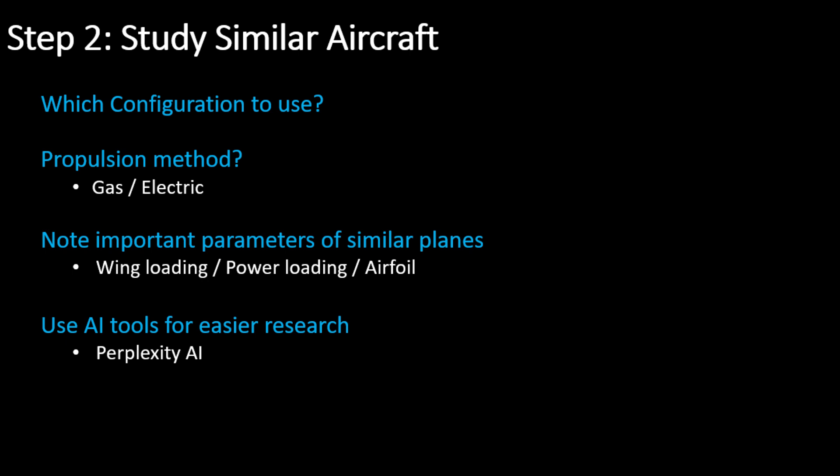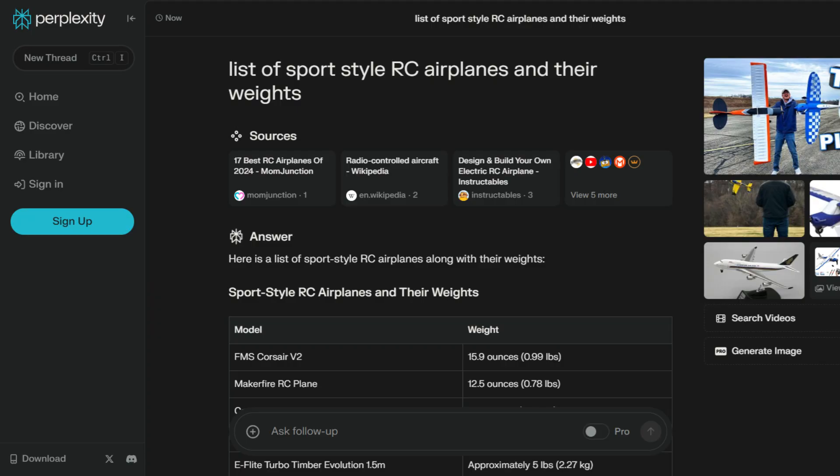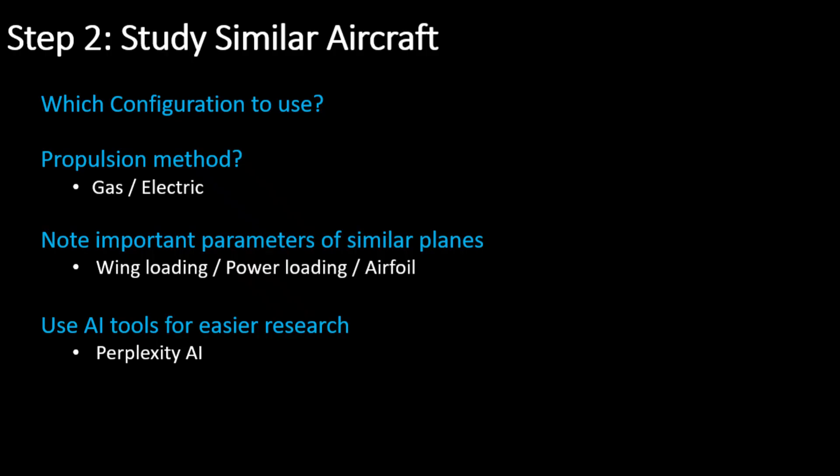Step 2: Study aircraft of the same class and determine which configuration may best suit your mission. You can use AI tools like Perplexity to quickly find information on similar planes. These tools can help streamline your research, but be sure to cross-check the information with reliable sources to ensure accuracy. Decide on the propulsion method — will it be electric or gas-powered?